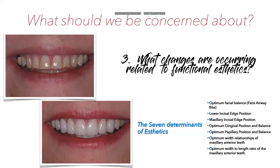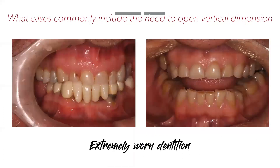What else should we be concerned about? We need to worry about changes related to functional aesthetics. Most of our patients that we're thinking about opening vertical dimension for also need their anterior teeth restored and a smile makeover — they're coming in because they want prettier looking teeth. There are a lot of different determinants of aesthetics to consider in conjunction with opening vertical dimension. Common cases requiring VDO opening include the extremely worn dentition. Don't forget about airway — bruxism and acid problems often go hand in hand with people having an airway issue as well.